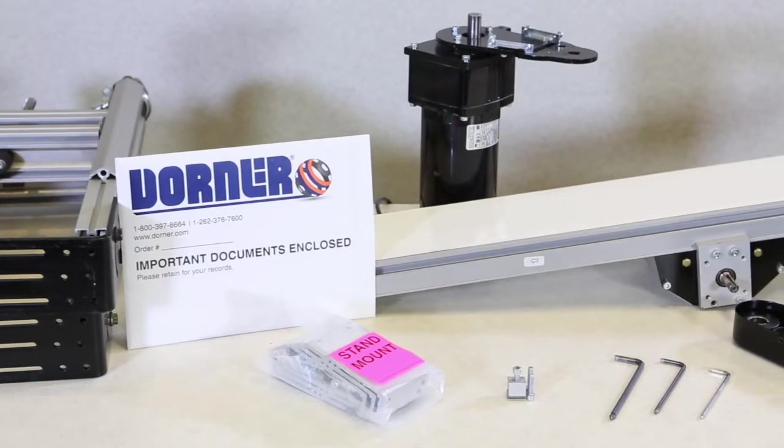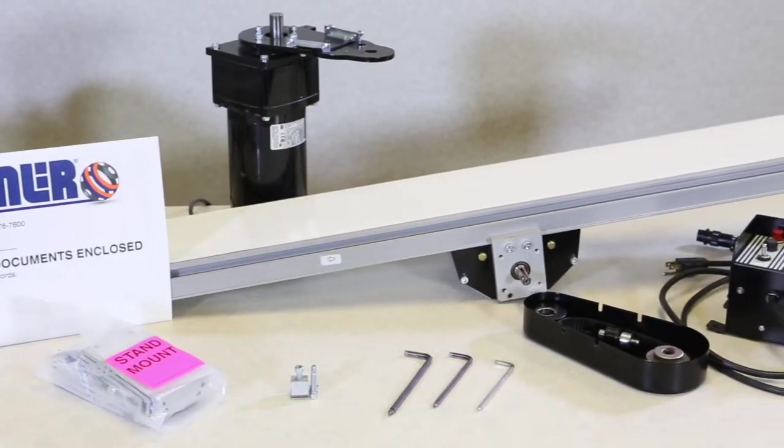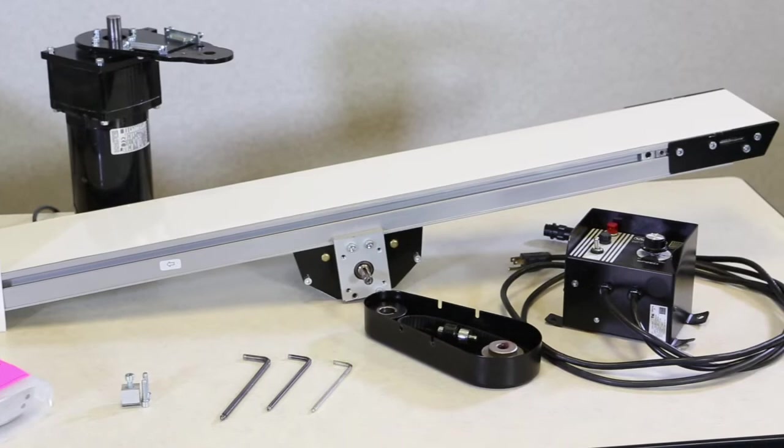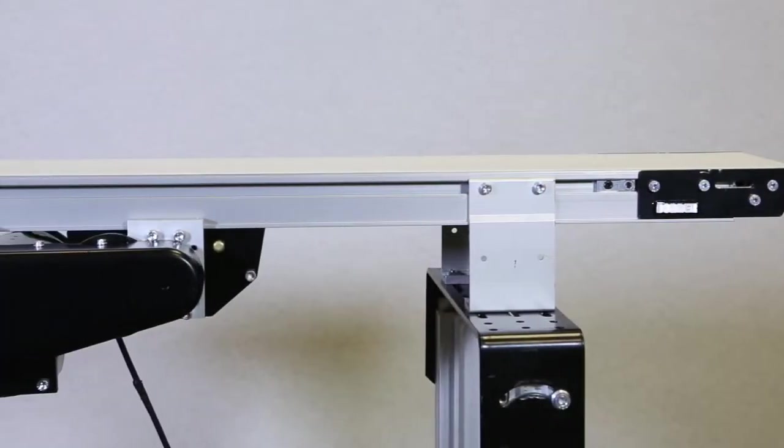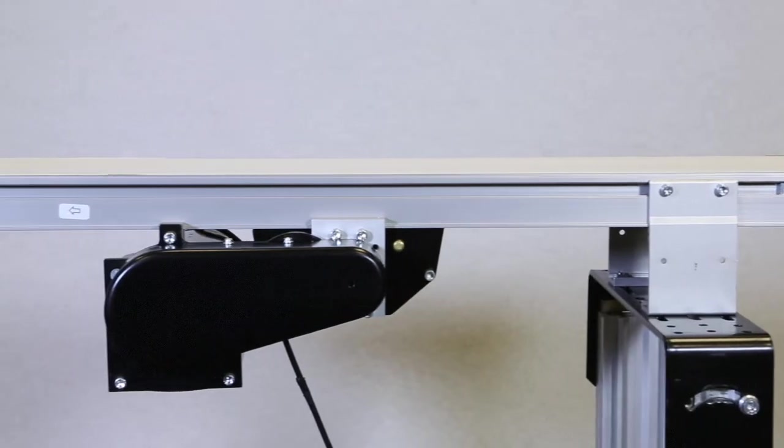Upon receiving your Dorner conveyor, unpack all items and make sure all required parts are included. No assembly is required for conveyors up to 12 feet. For longer conveyors, refer to the manual for instructions.